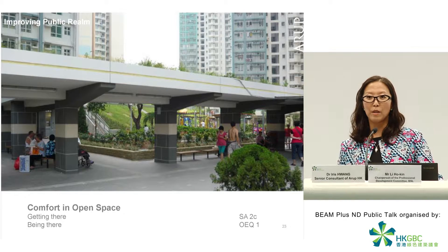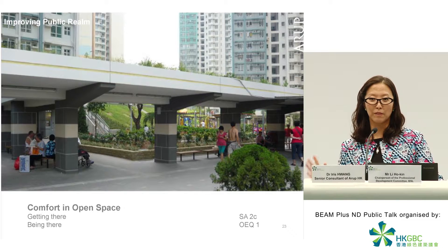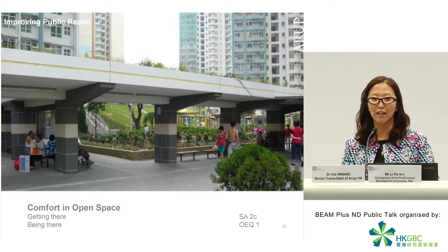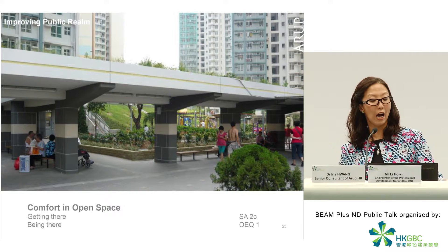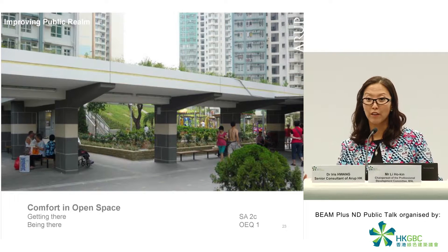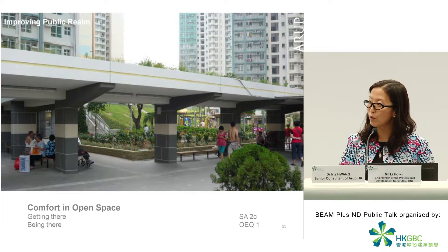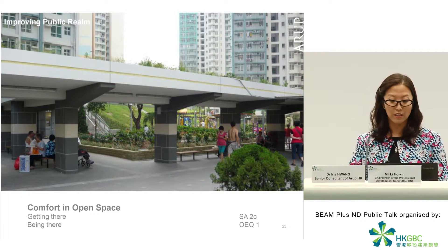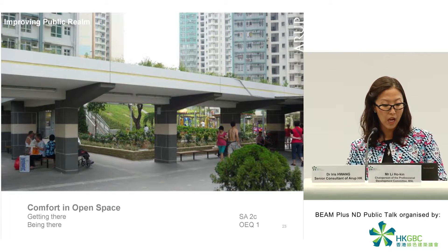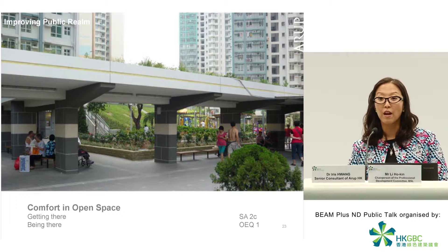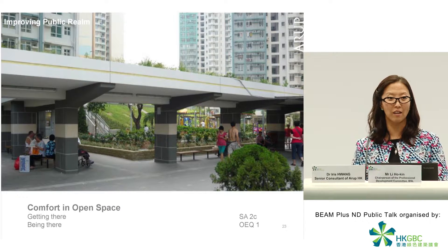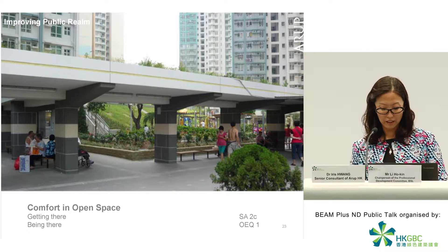Comfort is also important. None of us really wants to sit in the middle of a football pitch, completely exposed at 3pm in the middle of July sun. We need to look at how you can provide comfort in the open space. That includes how you get there as well — is there a shaded or covered walkway? Does it provide weather protection? Does it prevent heat stroke, which is important in a subtropical environment? And when you are there, do you have different options — can some kids run around in the sun, can some people rest in the shade?